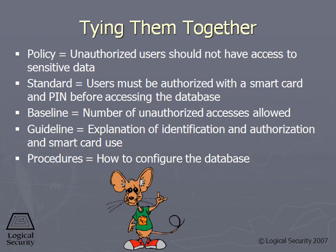That's the standard. The baseline is the number of unauthorized accesses allowed, because really you can't have 100% security. So you have to set a baseline that's a clipping level — it's an actual threshold. You have a guideline that explains what identification and authorization is and potentially how to use smart cards. And then you have procedures on how to actually configure a database that controls where the sensitive data is.